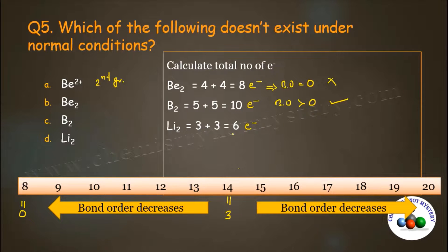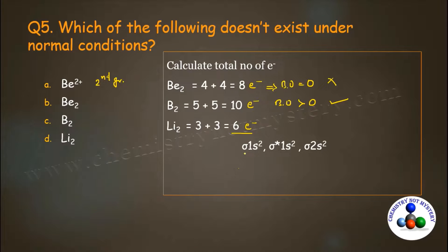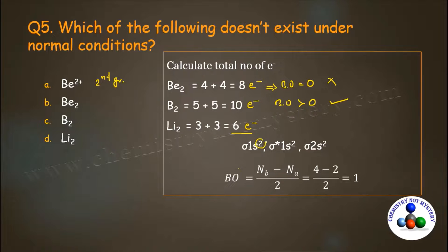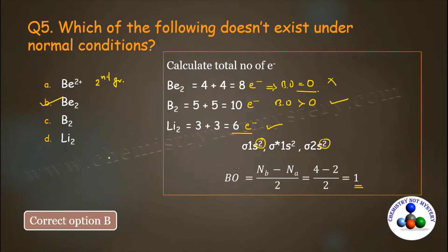For Li2 molecule with 6 electrons, use the proper molecular orbital filling: σ1s², σ*1s², σ2s². Using the formula (Nb - Na)/2 = (4 - 2)/2 = 1. Bond order equals 1, so Li2 does exist. Only Be2 has bond order 0 and will not exist. Option B is the right answer.